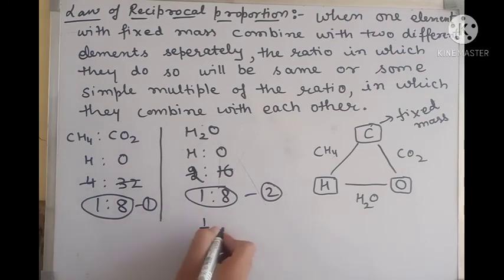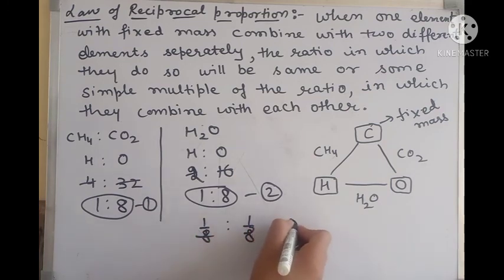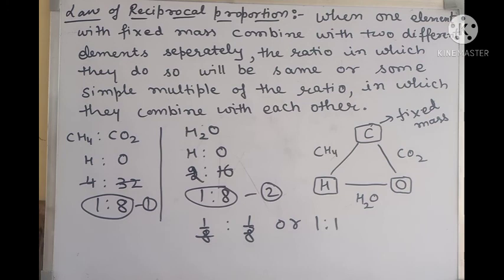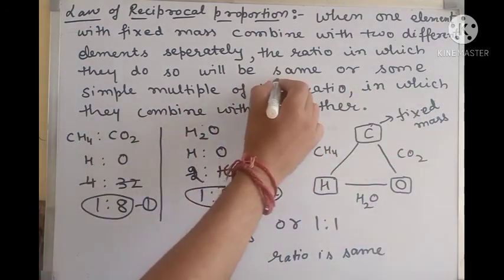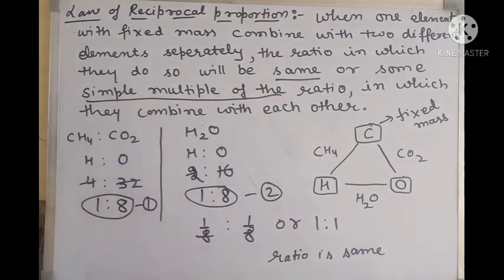Alternatively, we have water where hydrogen and oxygen are present. Hydrogen has two parts, oxygen has sixteen parts. The simplest ratio is 1:8. So it is 1:8 and 1:8. In this first example, we have said that the ratio can be a multiple, but if you look at this ratio, it is the same ratio in which they combine with each other.